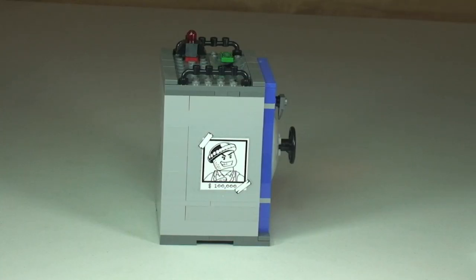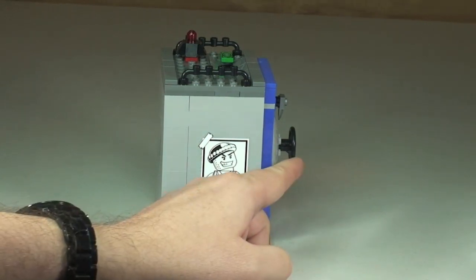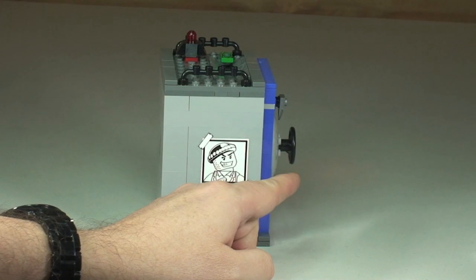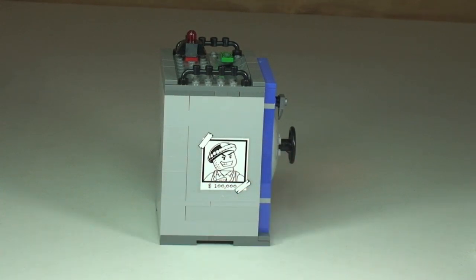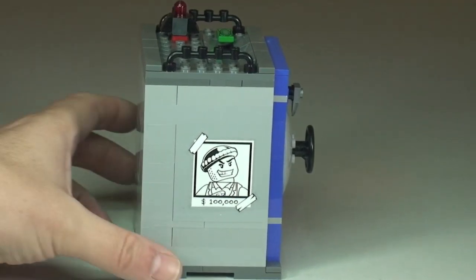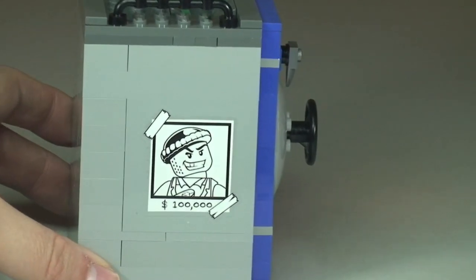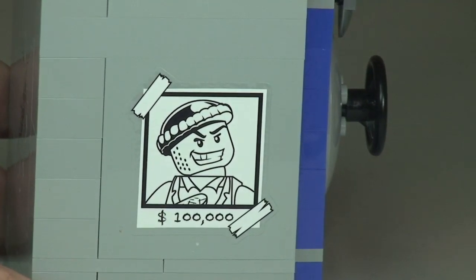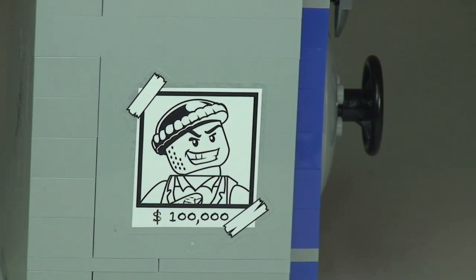Here's our first side shot of the coin bank. You can see the main handle mechanism for the door - we'll take a closer look at that in a second. On the side you should be able to make out a sticker - some kind of wanted sign, I'm guessing $100,000 reward.